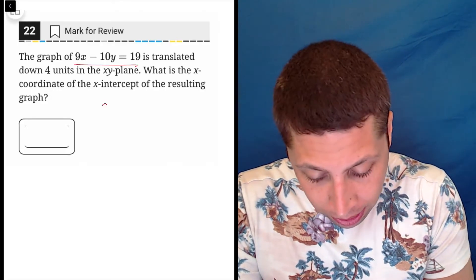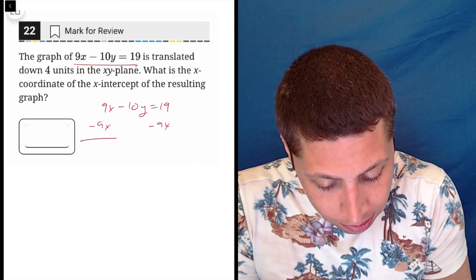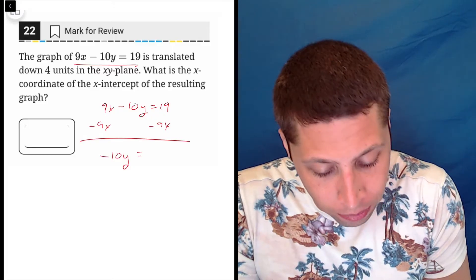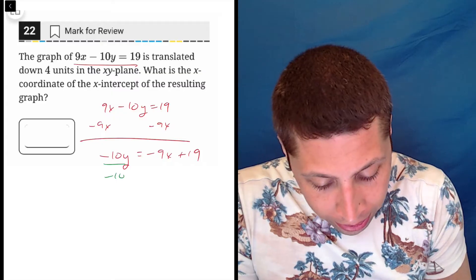So that's going to mean subtracting. So let me write the whole thing out. Start by subtracting 9X from both sides. So we have negative 10Y is equal to negative 9X plus 19. Then you can divide by negative 10.